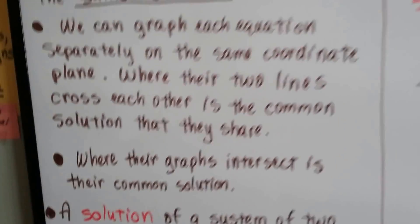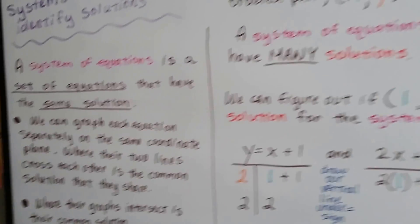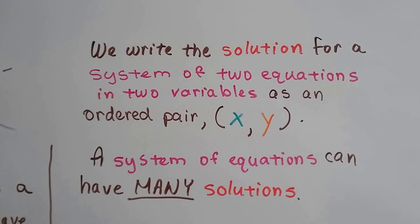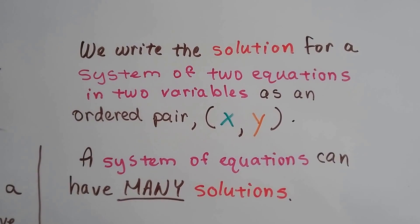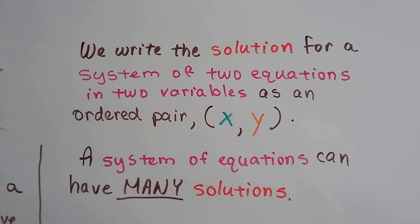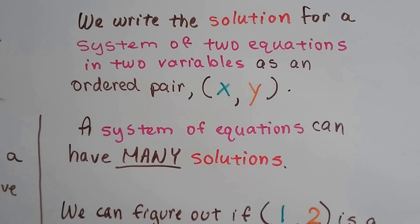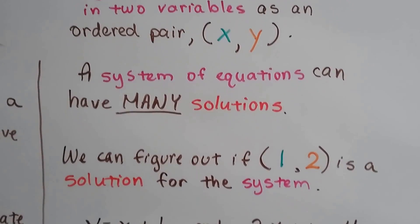We need an ordered pair that solves two equations. We write the solution for a system of two equations in two variables as an ordered pair, x and y, or a and b, whatever it is. And a system of equations can have many solutions.